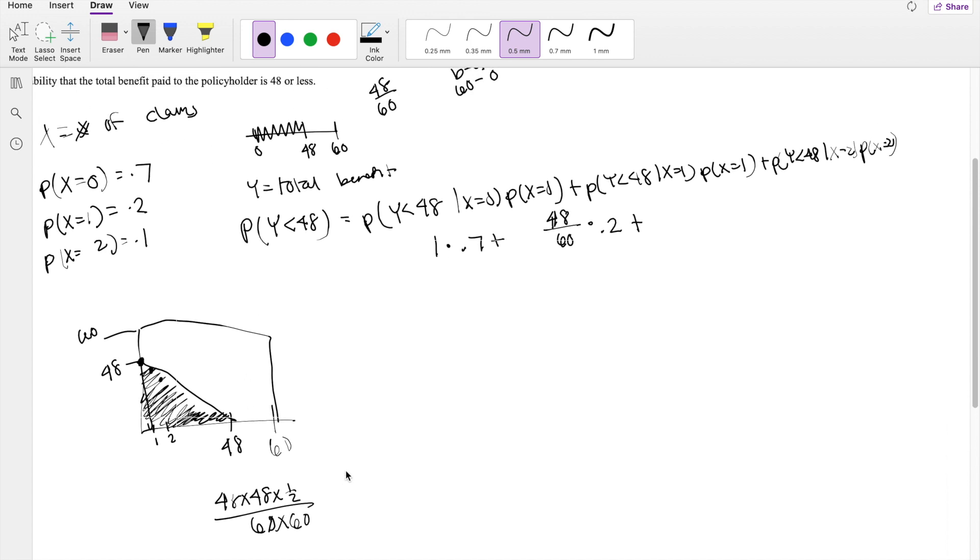So then this is going to be equal to 1152 divided by 3600, times the probability that x is equal to 2. So that's 0.1.